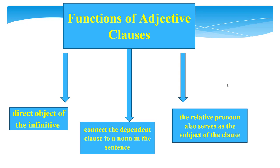Hint: When choosing between 'who' and 'whom,' consider how the pronoun is used in the dependent clause, not the independent clause. 'These are the students who are going' — 'who' is the subject of the dependent clause (they are going). 'Those are students to whom I bought the tickets' — 'whom' is the object of the preposition 'for' (I bought the tickets for them).